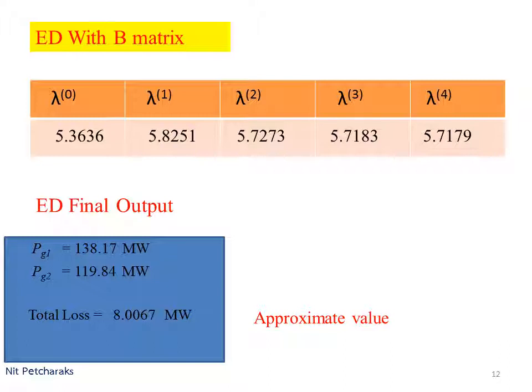Let's start with the initial value of lambda approximately 5.4 dollars per megawatt hour, then perform economic dispatch with loss consideration as described in the former slide. This process is performed iteratively until power balance constraint is satisfied.